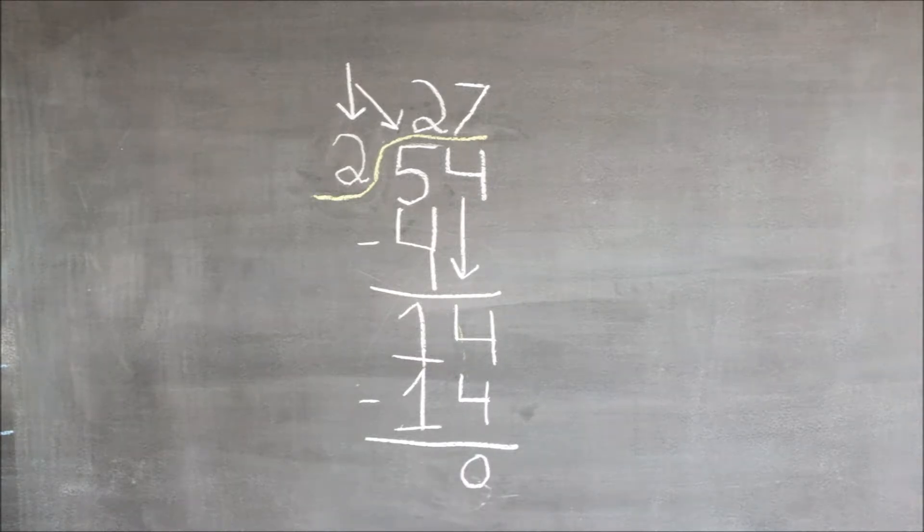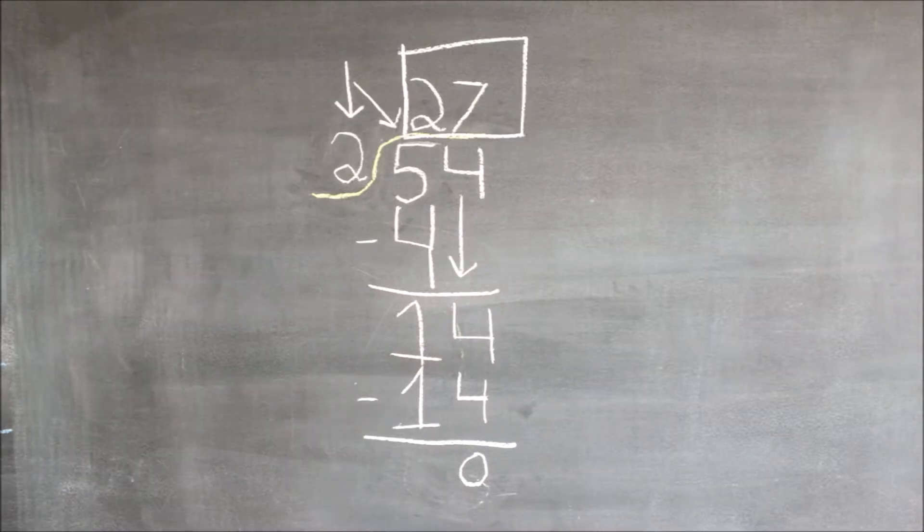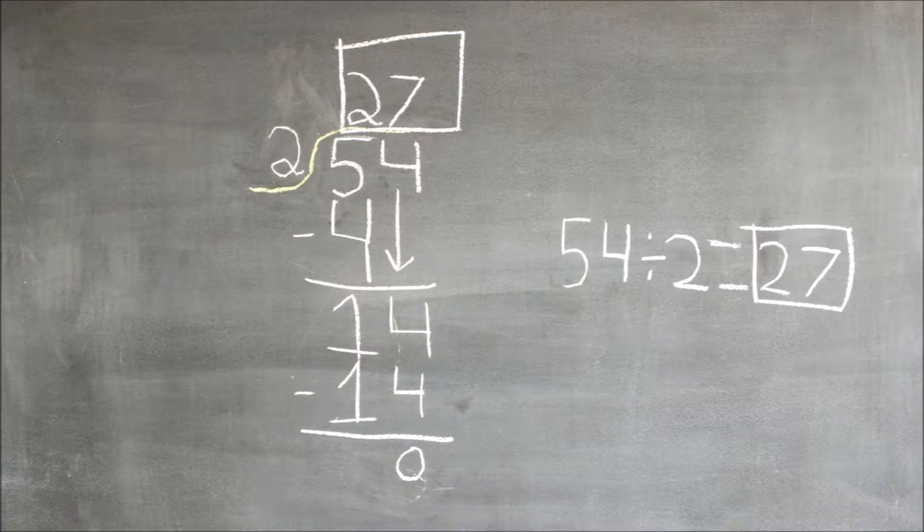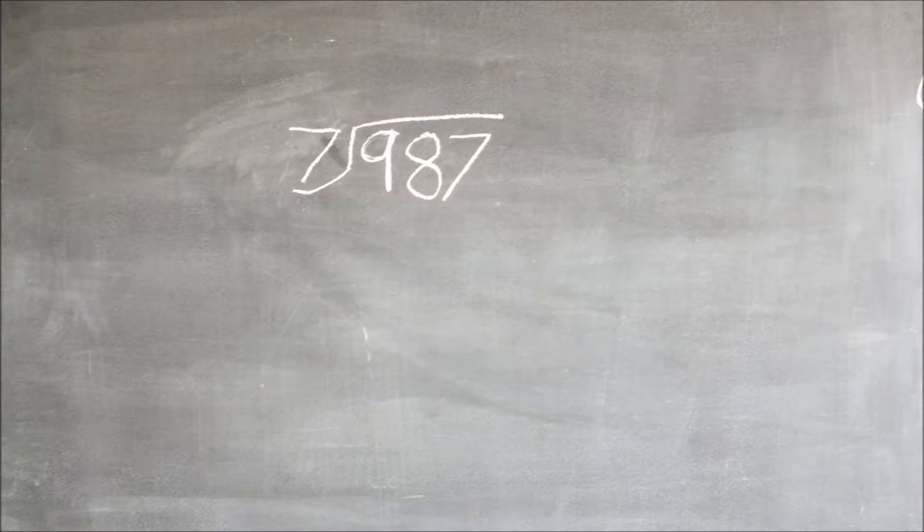When we have done this, our final answer will be 27. We can also write this as 54 divided by two equals 27.